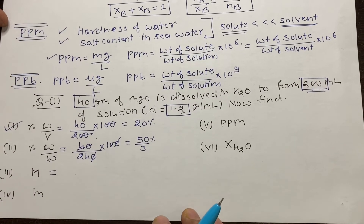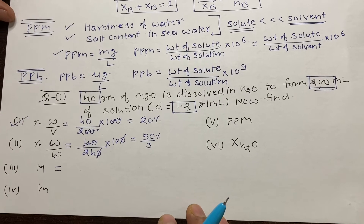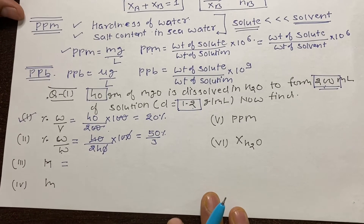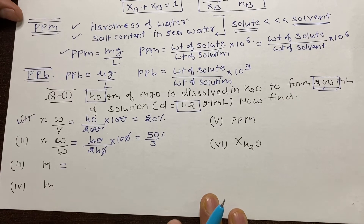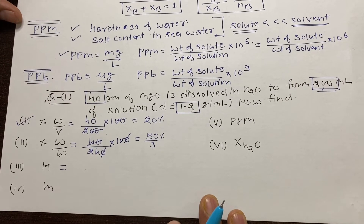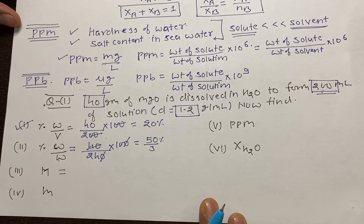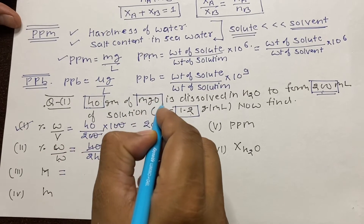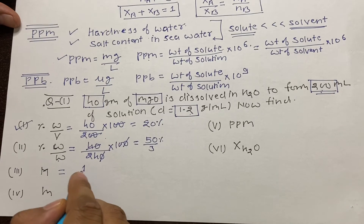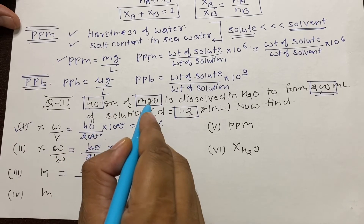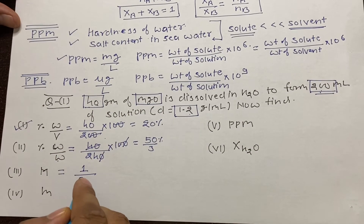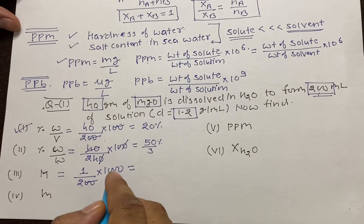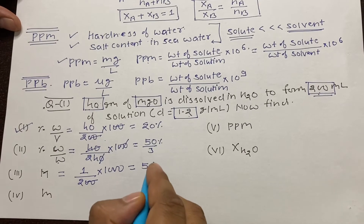For molarity: it is moles per liter of solution. The number of moles of MgO = 40 ÷ 40 (molecular mass of MgO) = 1 mole, present in 200 mL of solution. Converting to liters: molarity = 1 / 0.2 = 5 M.